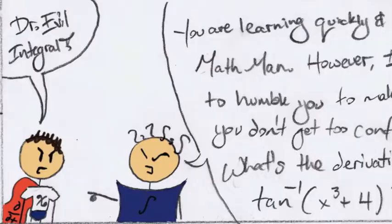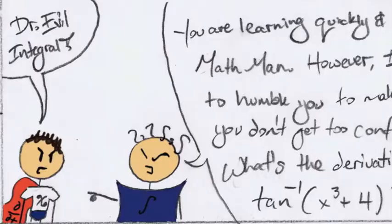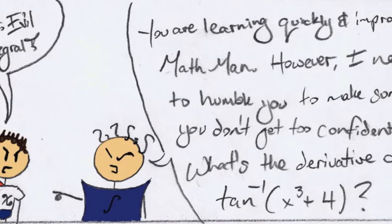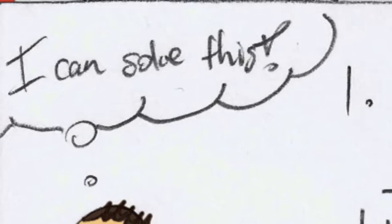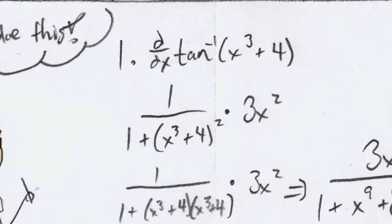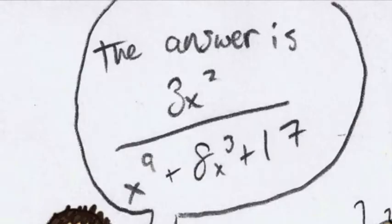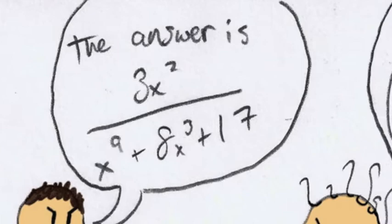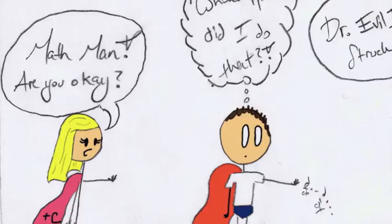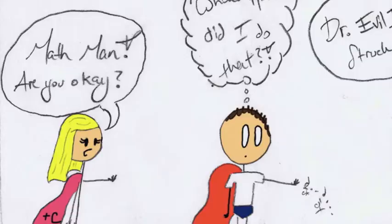Dr. Evil Integral! You are learning quickly and improving, Math Man. However, I need to humble you to make sure you don't get too confident. What's the derivative of inverse tangent x cubed plus four? I can solve this. Oh, brain farting. The answer is 3x squared all over x to the ninth plus 8x cubed plus 17. Grr. Integral power. Get out!